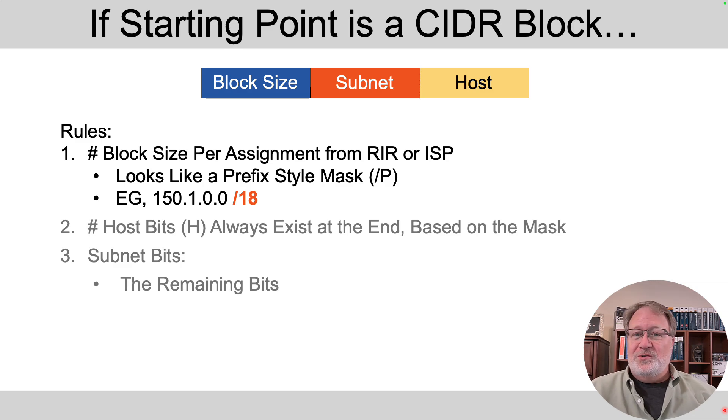So far, the examples assumed you were subnetting a class A, B, or C network. But let's say you're subnetting a public CIDR block. It's a large CIDR block, and all your addresses are from that CIDR block. So you've got this big block size. Well, you may end up doing that.